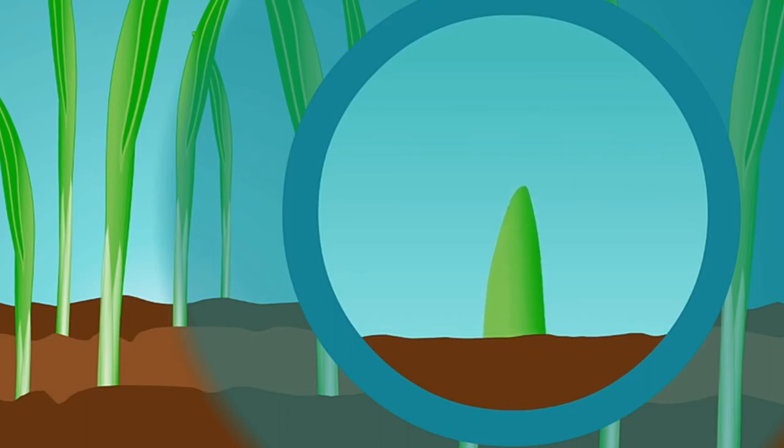Fritz Vent removed the coleoptile tip and incubated it on a block of agar. The agar was then placed on the coleoptile, off-center, in darkness.